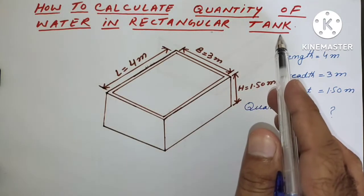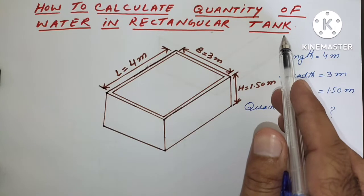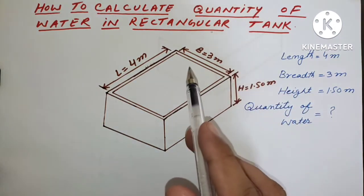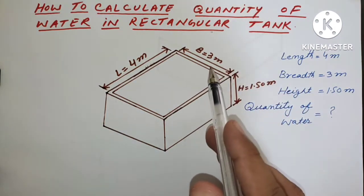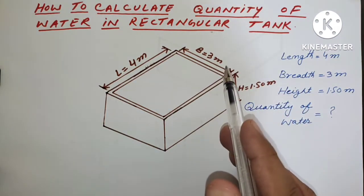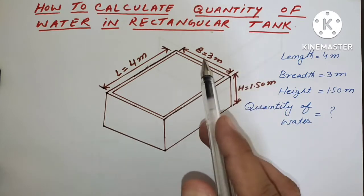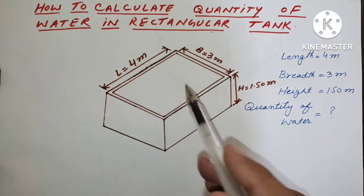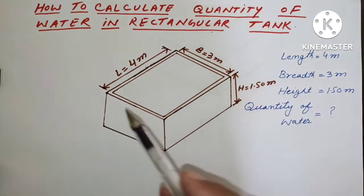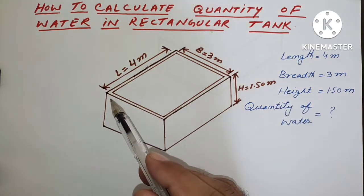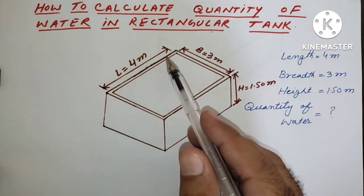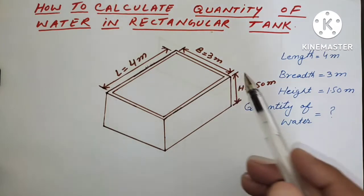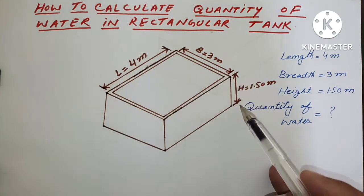Today our topic is how to calculate the quantity of water in a rectangular shape water tank. If we have any rectangular or square shape water tank, we will calculate its capacity.